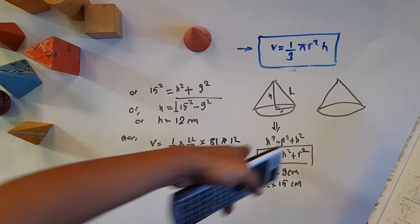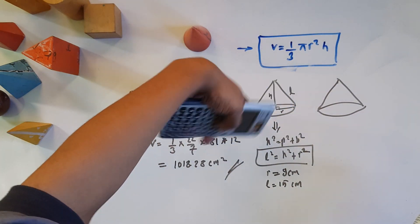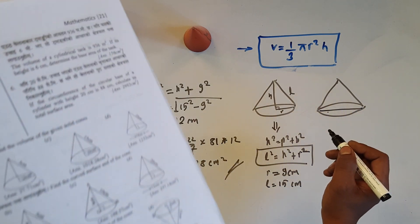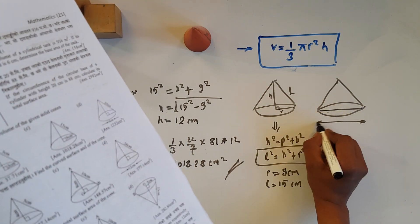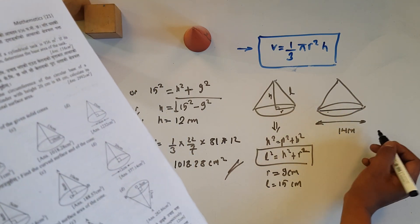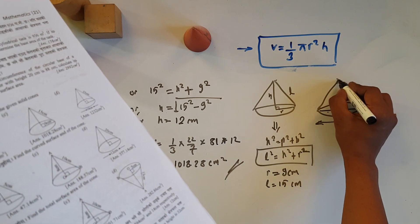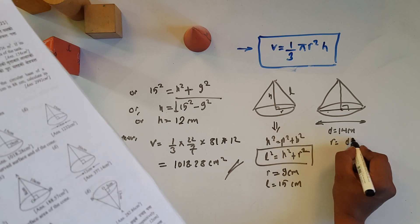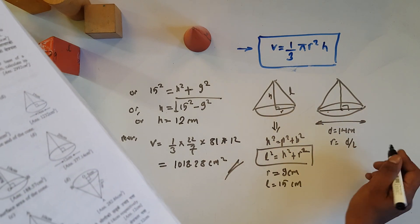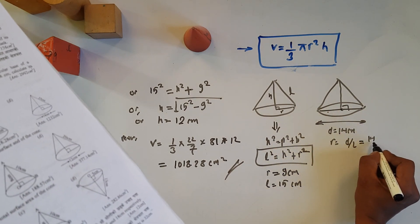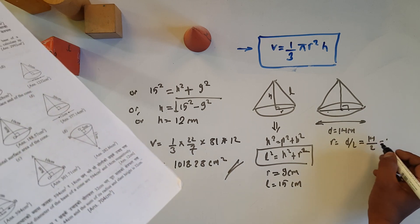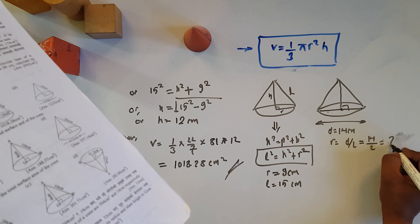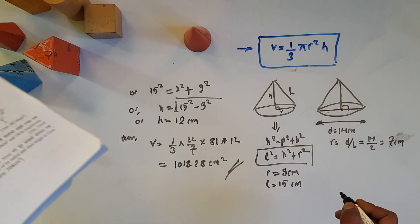Now we have to find the radius and the slant length. The next question gives the diameter, and the slant length is 14 cm. We need to find the radius from the diameter.